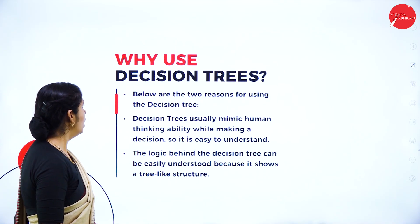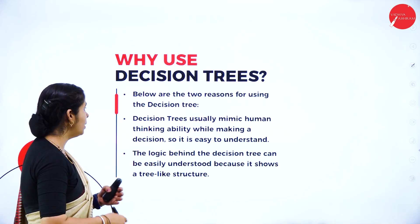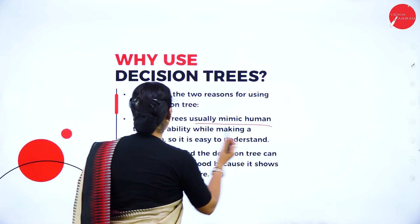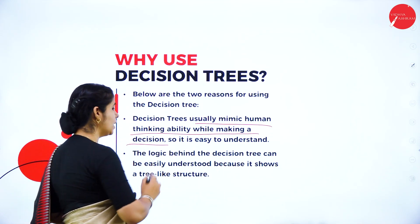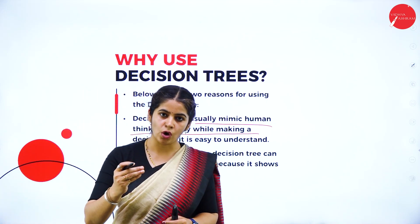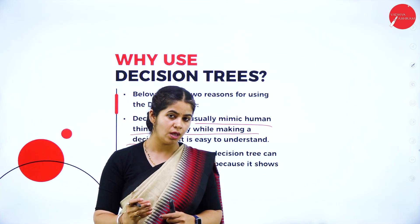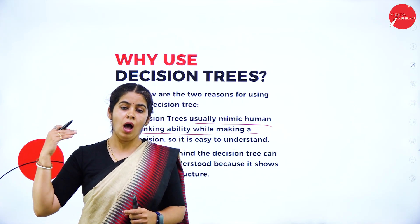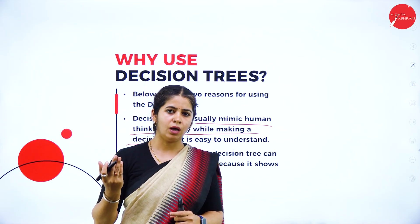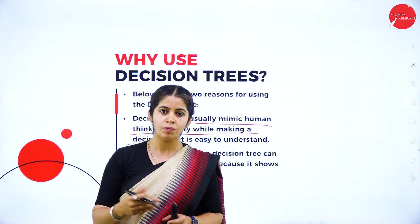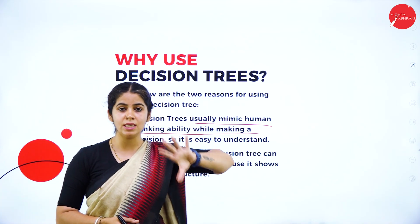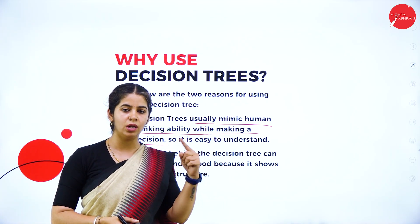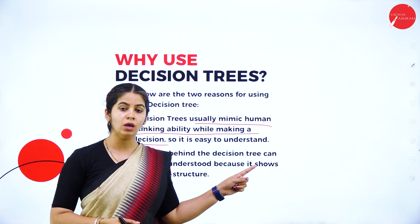Why use a decision tree? There are two main reasons. First, a decision tree usually mimics human thinking ability while making a decision. For example, when you are joining a particular college, you might think of many options — what are the attributes: is it nearby, what is the fee structure, how is the course? You will have different perspectives for choosing a college — that represents human behavior.